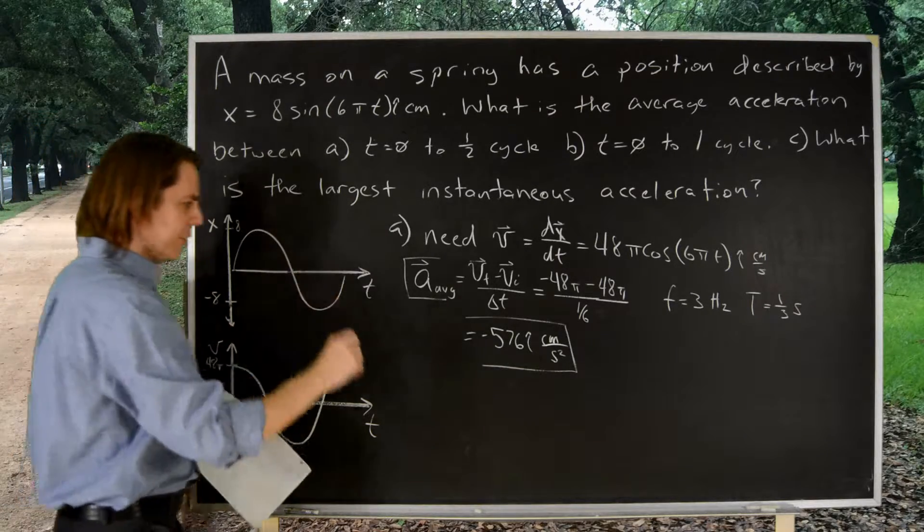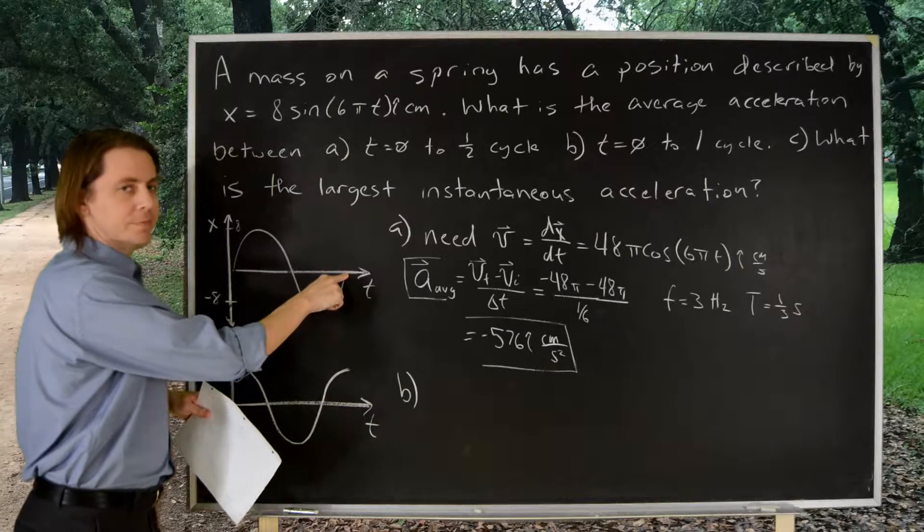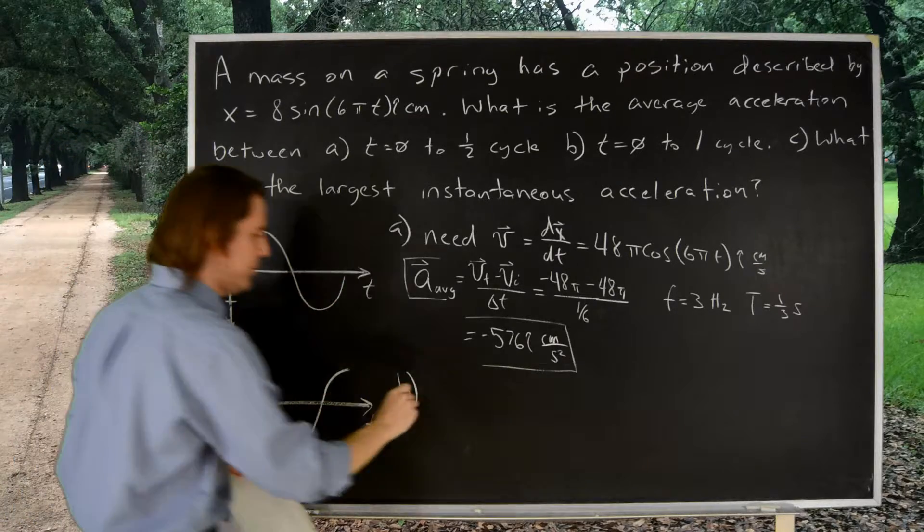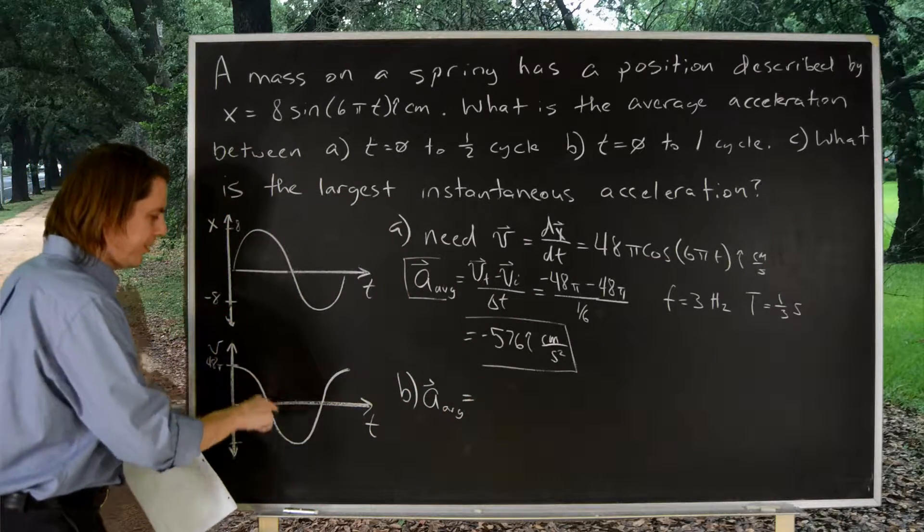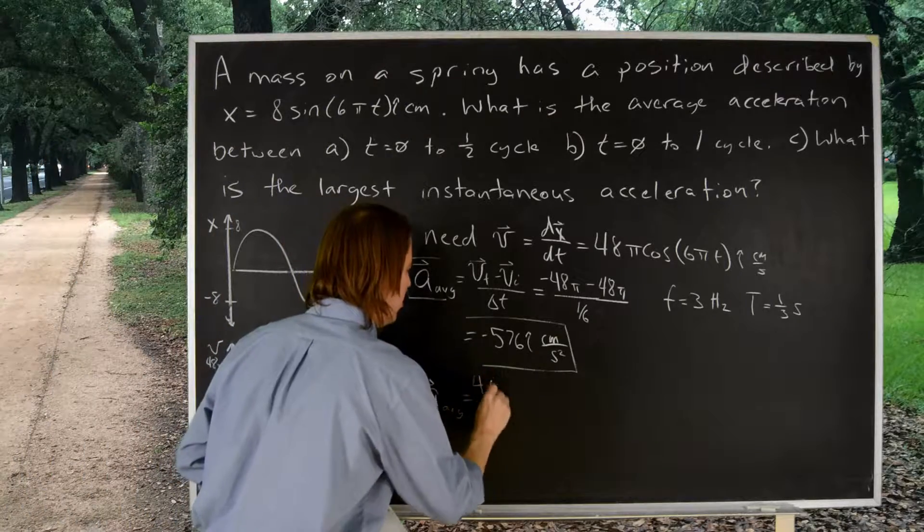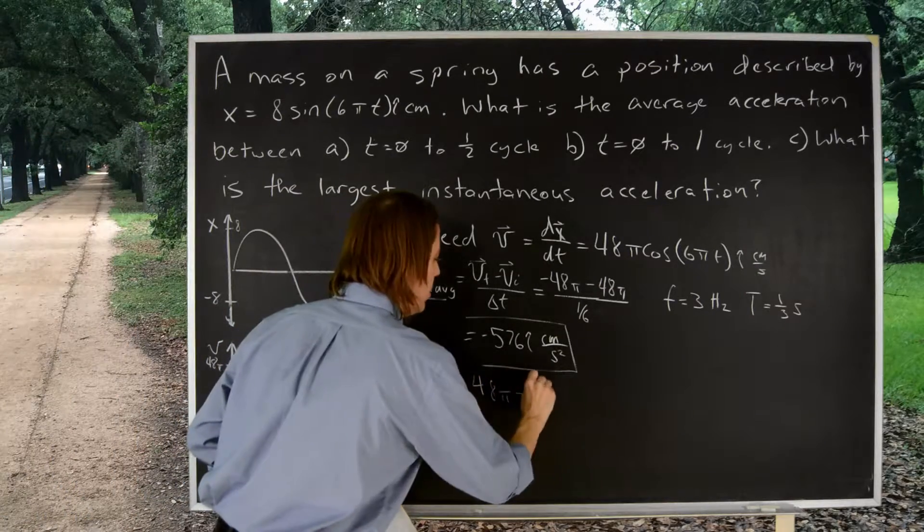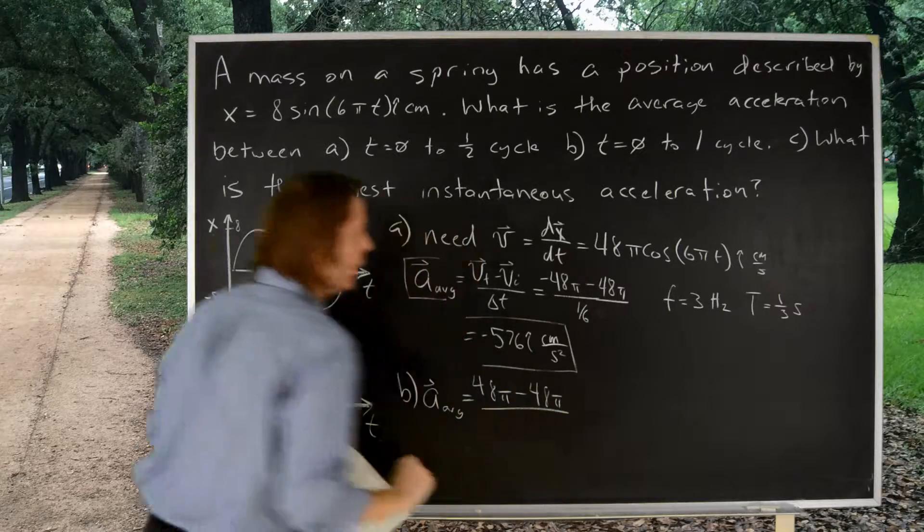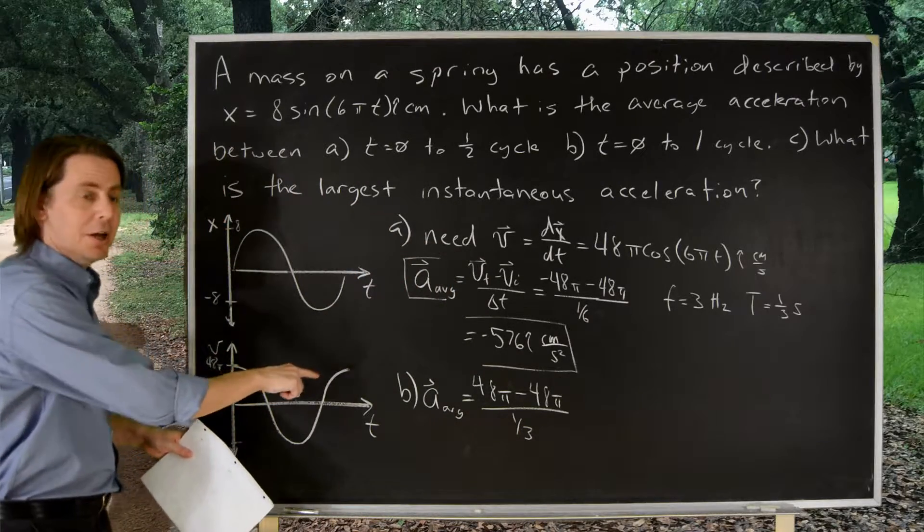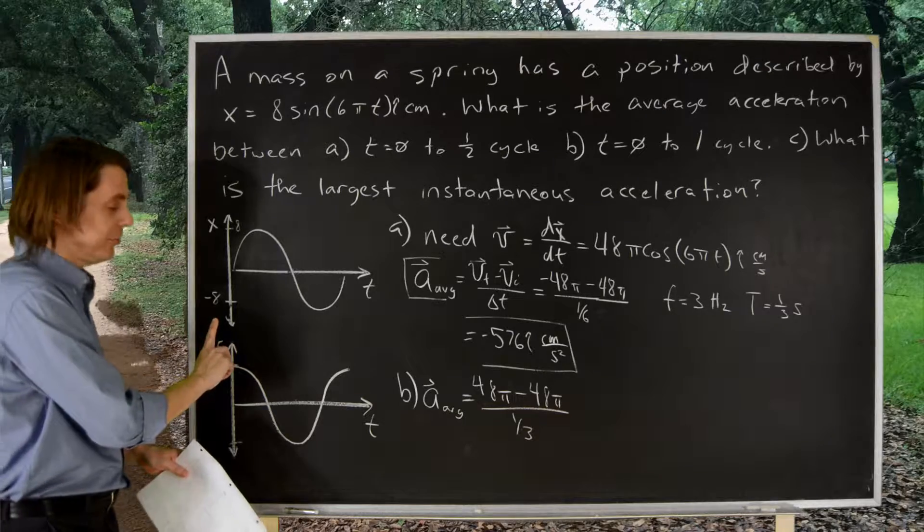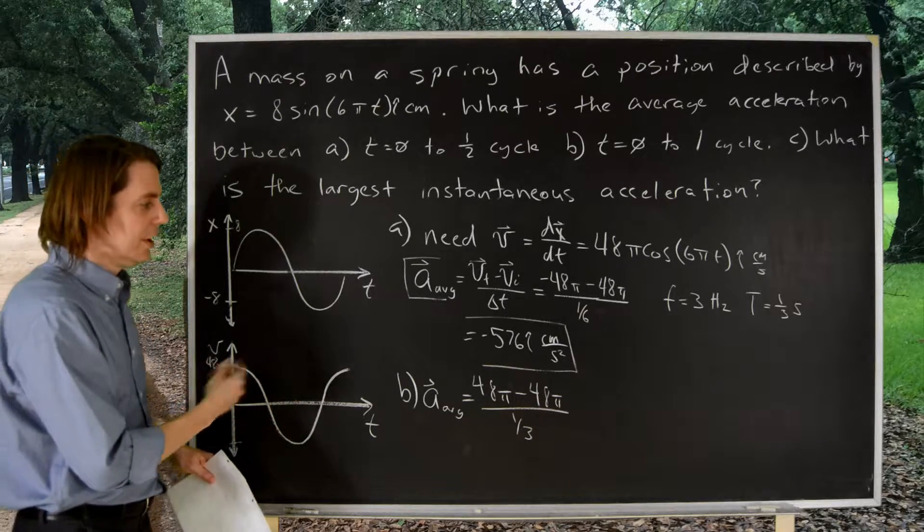Let's look at part B. Now, we want the average between time equals zero and a full cycle. It's the same strategy. A average final minus initial. Velocity final after an entire cycle is back up to 48 pi. Minus velocity initial, 48 pi. The delta T would be a full period, so it would be one third of a second, but it doesn't matter because our delta V is zero. We started out with a velocity up 48 pi centimeters per second. We ended 48 pi centimeters per second. All the exciting stuff in the middle doesn't matter because this is an average. So, the answer is zero.